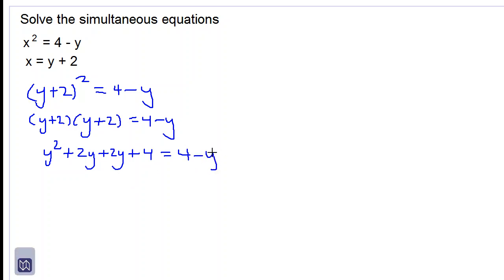We want to get all of the letters on the left-hand side. So let's simplify this. y squared plus 2y plus 2y is 4y plus 4 is equal to 4, take away y. We want to subtract 4 from both sides of the equation, so they cancel. And then we want to add y to both sides.